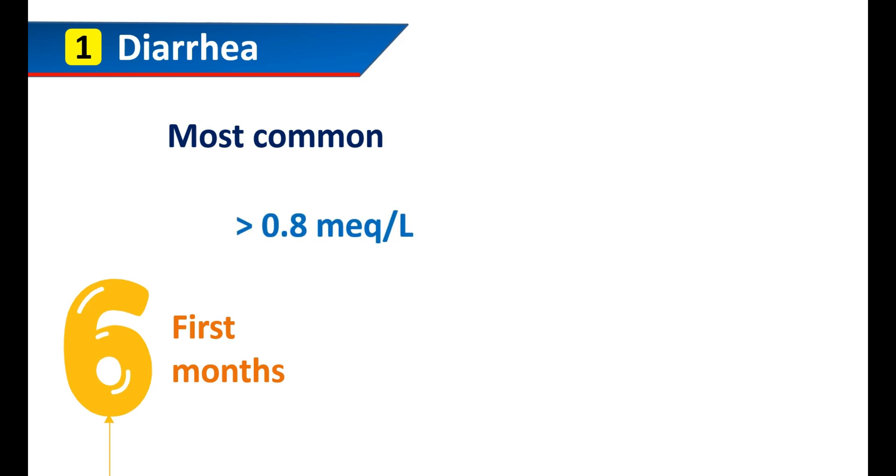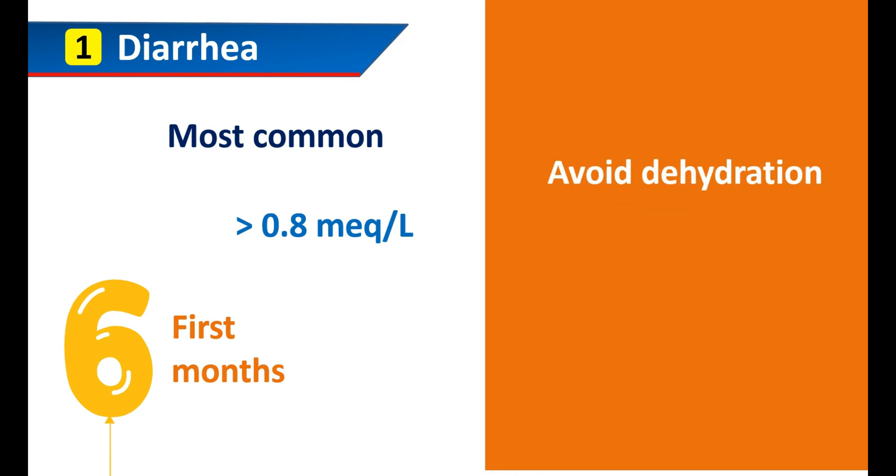The first one is diarrhea. It is the most common side effect of lithium that can be observed within the first six months of treatment. It is often associated with moderate dehydration. Particularly, diarrhea can be observed when lithium levels are greater than 0.8 milliequivalents per liter in the blood. So, it is better to avoid dehydration by indulging in plenty of fluids.